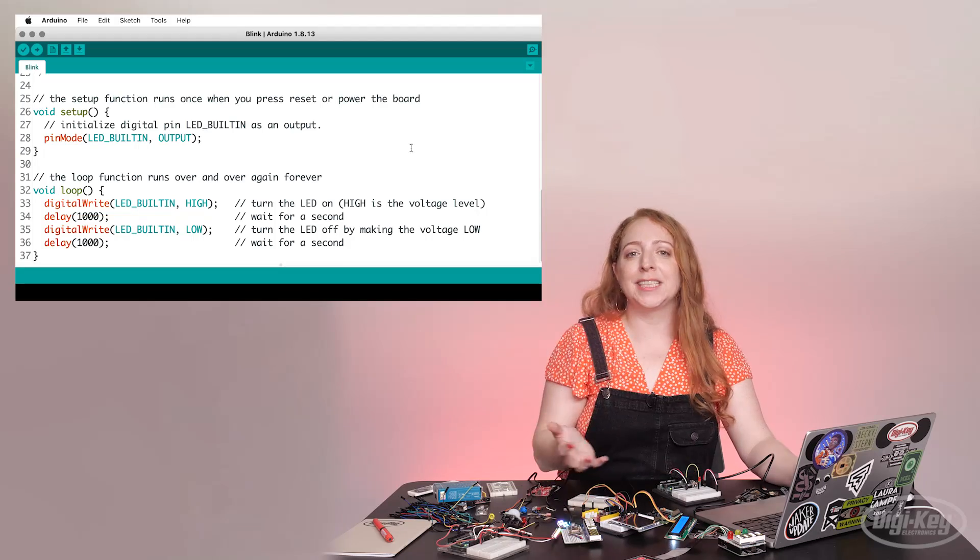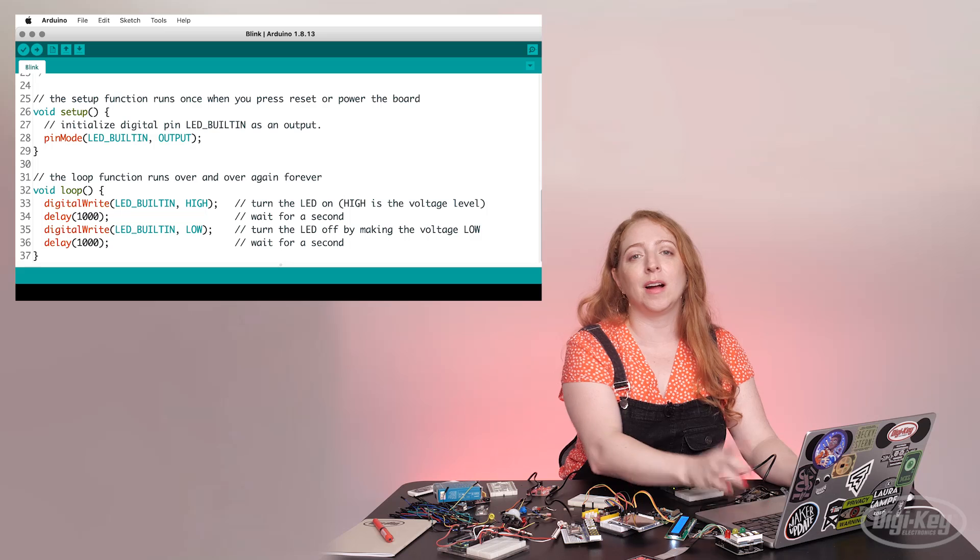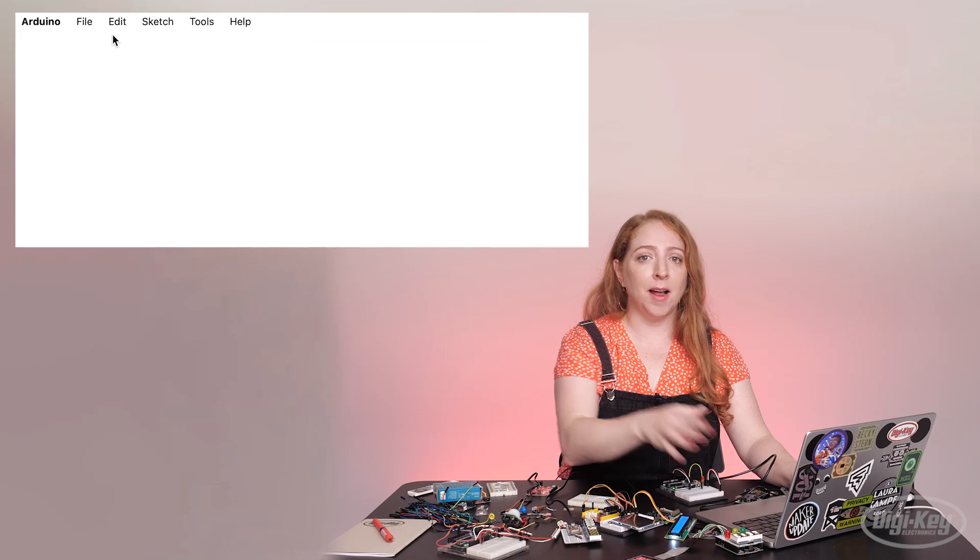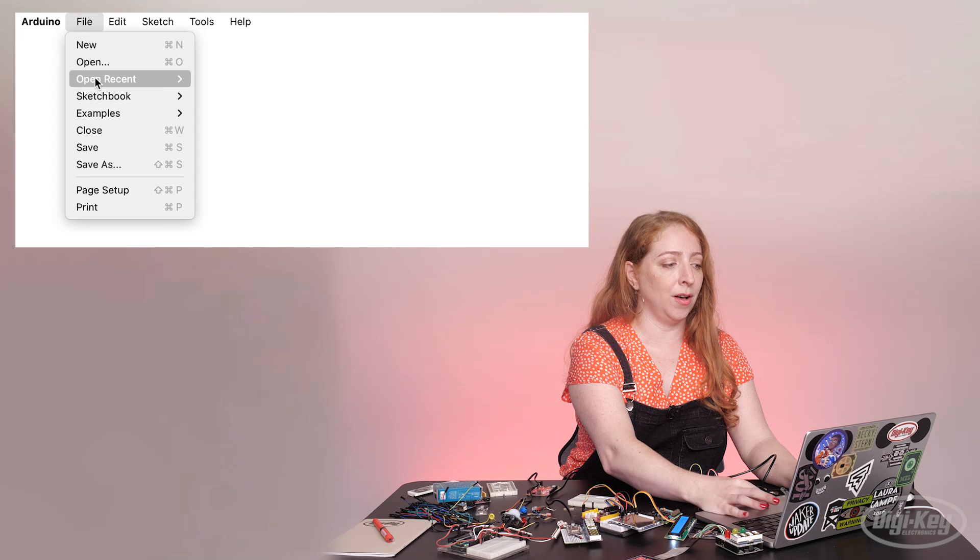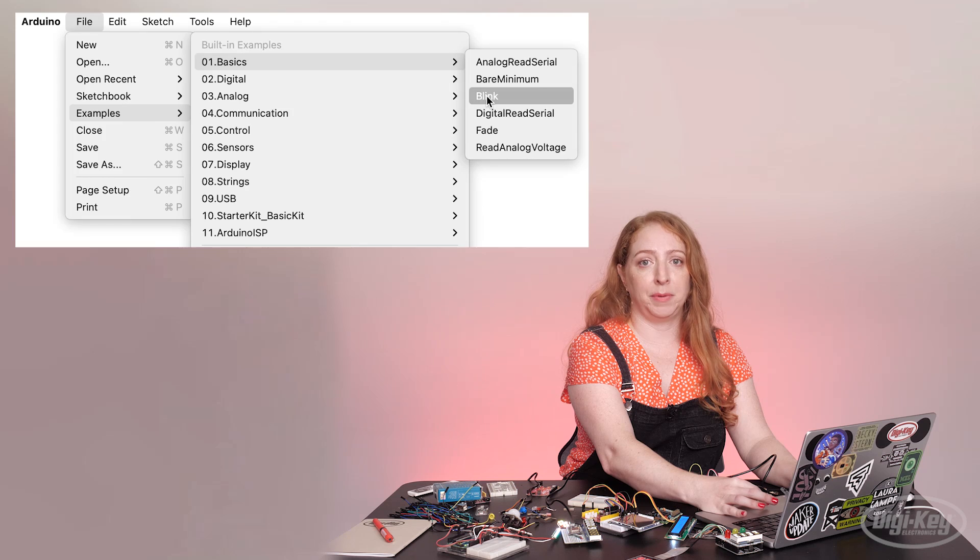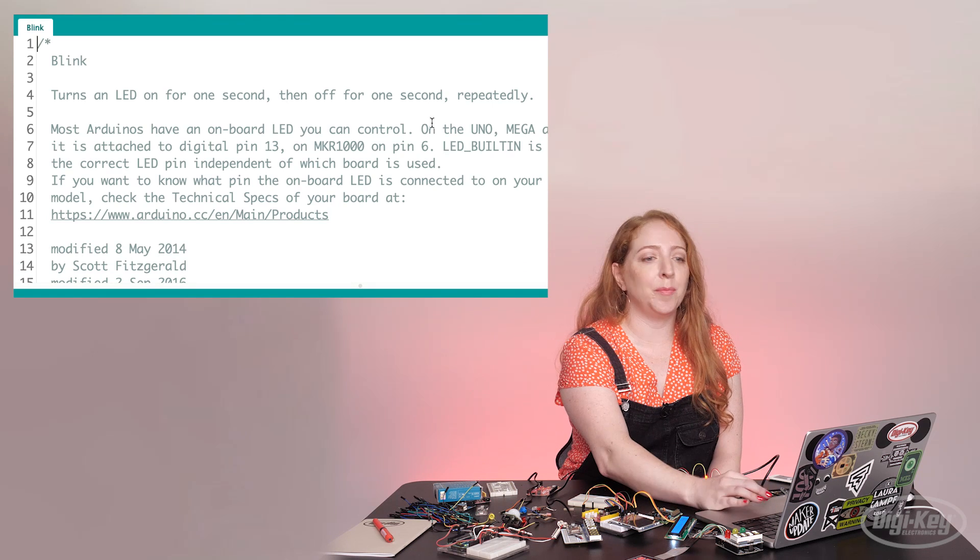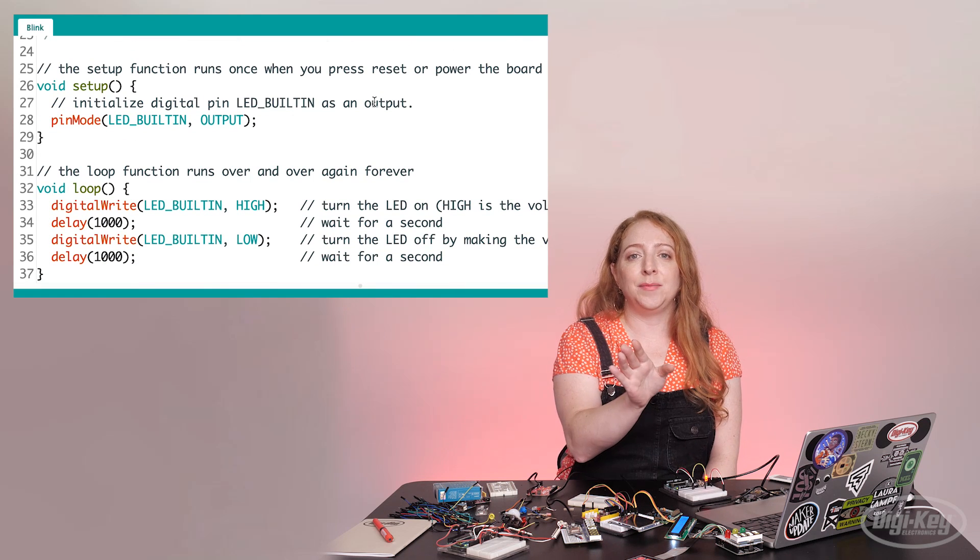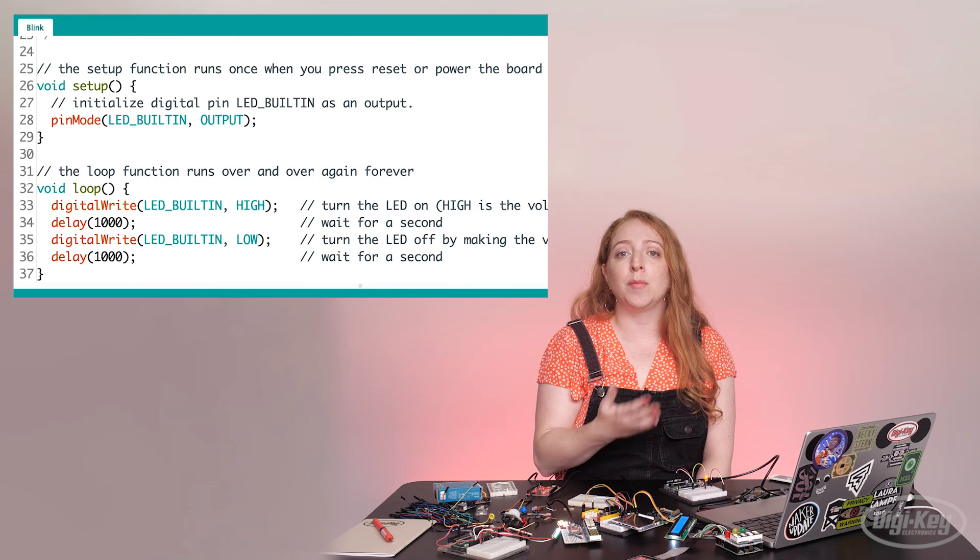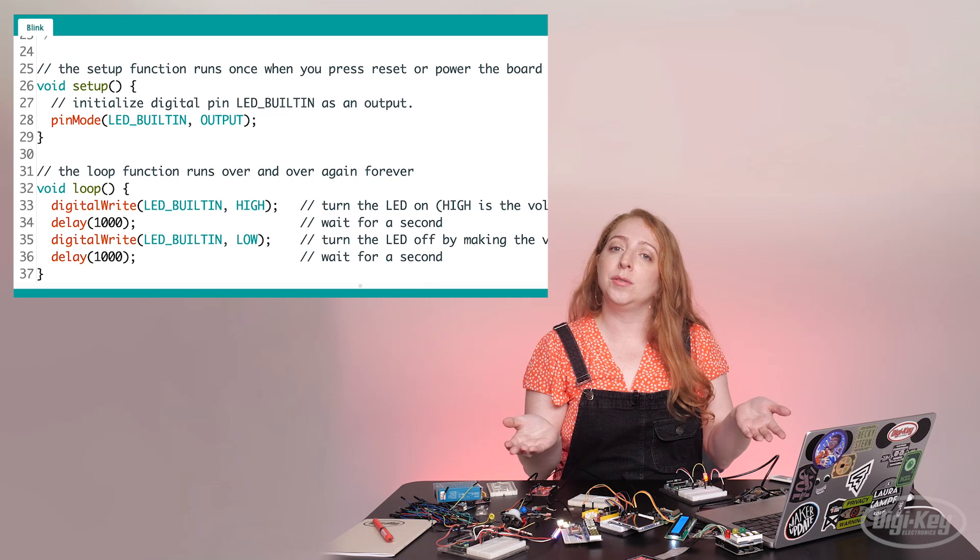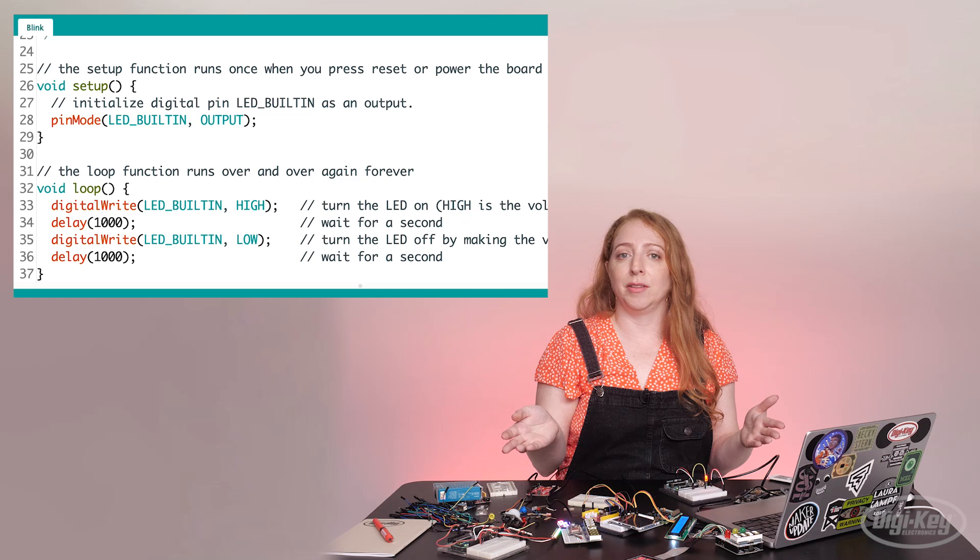The basic blink example is included in the downloadable Arduino software, which you'll need to install on your computer. Open it up and look under File, Examples, 01 Basics, Blink. All the extra symbols are part of Arduino's syntax, but don't get intimidated. It takes time to learn and write proper code from scratch. I'll break it down for you here, and you can always use the examples for reference as you level up.